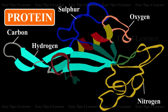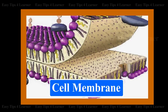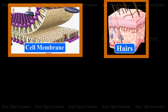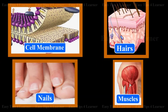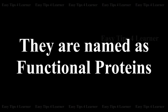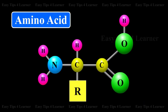In living systems, proteins play an important role in structural organization. Examples include cell membrane, hairs, nails, and muscles. Many proteins serve as enzymes; they are named as functional proteins.